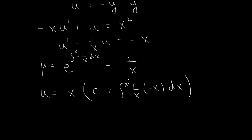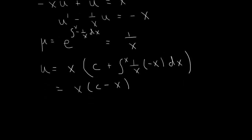So this is just minus 1. So the integral of minus 1 is minus x. So we get x times c minus x. OK? So that's our solution for u.